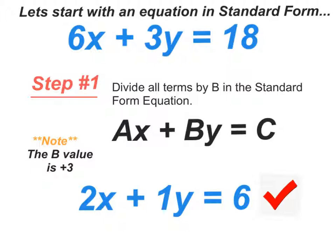Step number 1, divide all your terms by the b value in the standard form equation. Now look where b is at. b is the coefficient in front of y. The thing you want to pay attention to is its sign as well. Sometimes it's negative, sometimes it's positive.